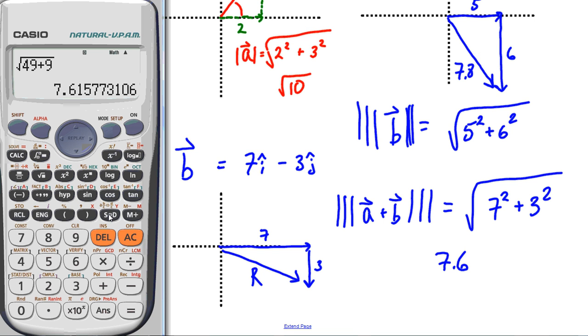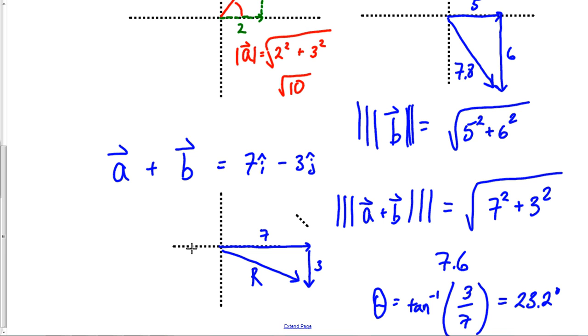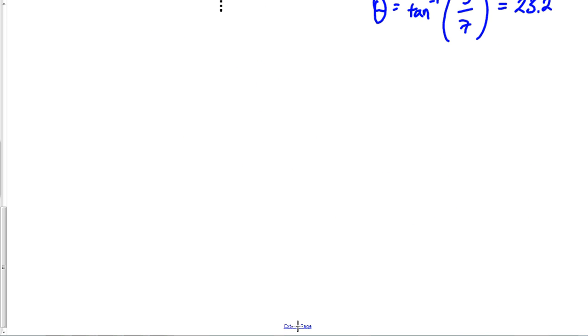What if I was asked to find theta? No big deal: tan inverse of opposite over adjacent, 3 over 7. My answer is 23.2 degrees. That's the general idea of what you're asked to do. You could also be asked to subtract these two vectors.